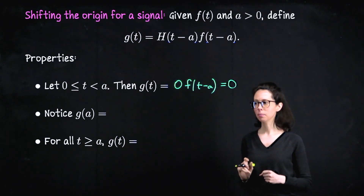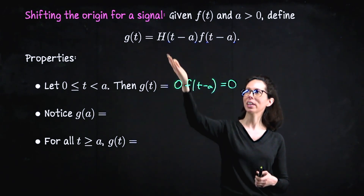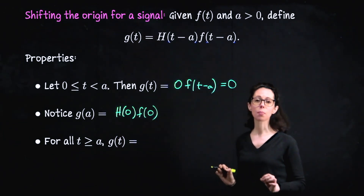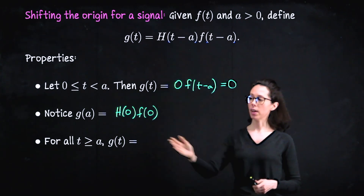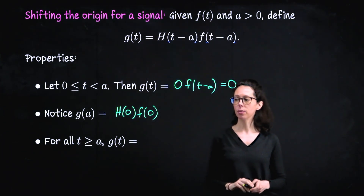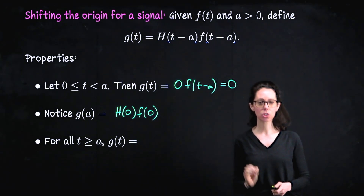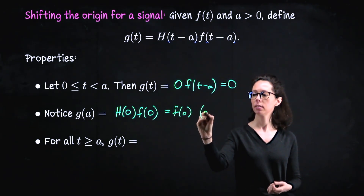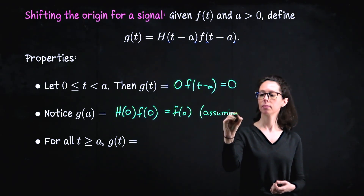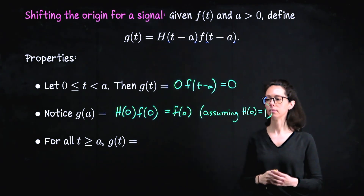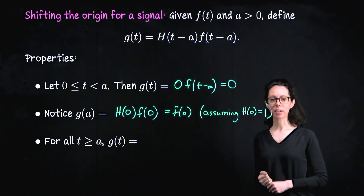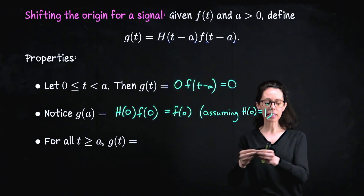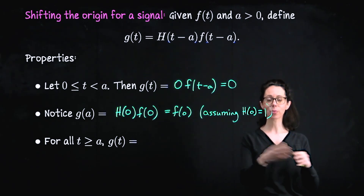What happens right at the moment when t equals a? We're looking at h of zero times f of zero. If you've defined by convention the Heaviside function to be one at zero, then our original signal starts when t equals a — so we get f of zero, assuming h of zero is one. Notice that the origin for the original signal has been shifted to a. This is f of zero, not f of a — we've slid the function's behavior at zero over to a, shifting the whole function to the right.